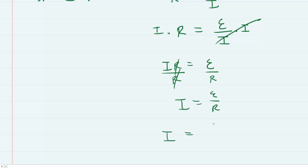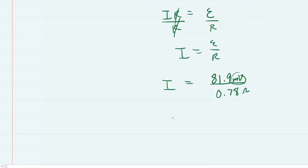Notice when you plug in the induced EMF, you can use the millivolt value. So we're going to use 81.9 millivolts, divided by the resistance of 0.78 Ohms. The reason we can leave it in millivolts is then our answer comes out in milliamps rather than amps, which is what the homework system probably asks for. We have 105 milliamps as the final and correct answer for part B.